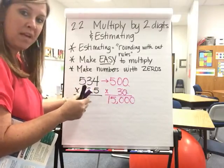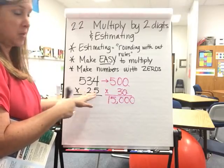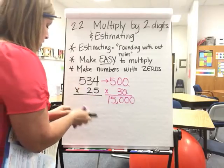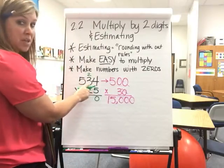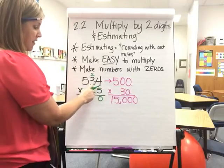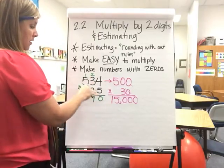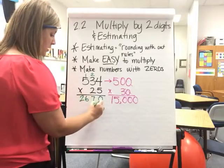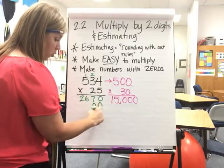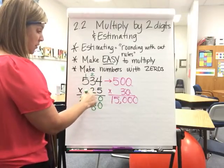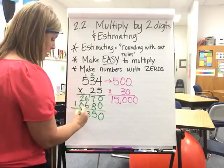So you still want to make this bottom number right here, this bottom factor, be able to multiply by zero. We're using zero. So then you do your actual multiplication. 5 times 4 is 20. Carry my 2. 5 times 3 or 5 times 30, that's your distributive property. 5 times 30 plus 2 is 17 or 170. 5 times 5 is 25 plus 1 more is 26.